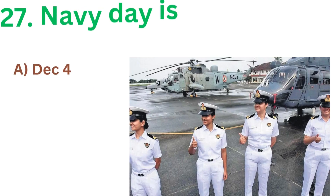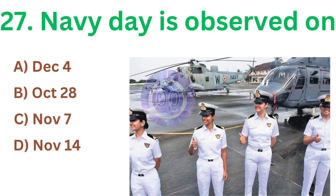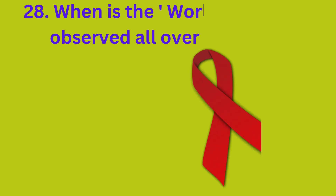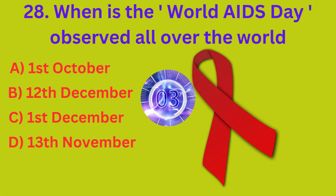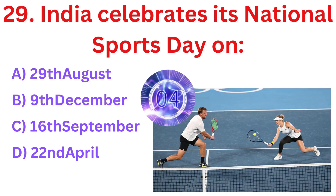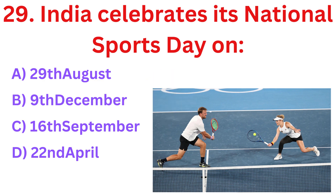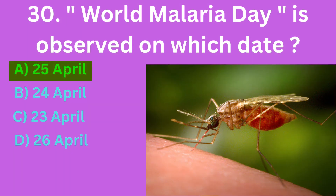National Civil Service Day is celebrated on — the correct answer is option A, 21 April. Navy Day is observed on — the correct answer is option A, 4th December. When is World AIDS Day observed all over the world? The correct answer is option C, 1st December. India celebrates its National Sports Day on — the correct answer is option A, 29 August. World Malaria Day is observed on which date? The correct answer is option A, 25 April.